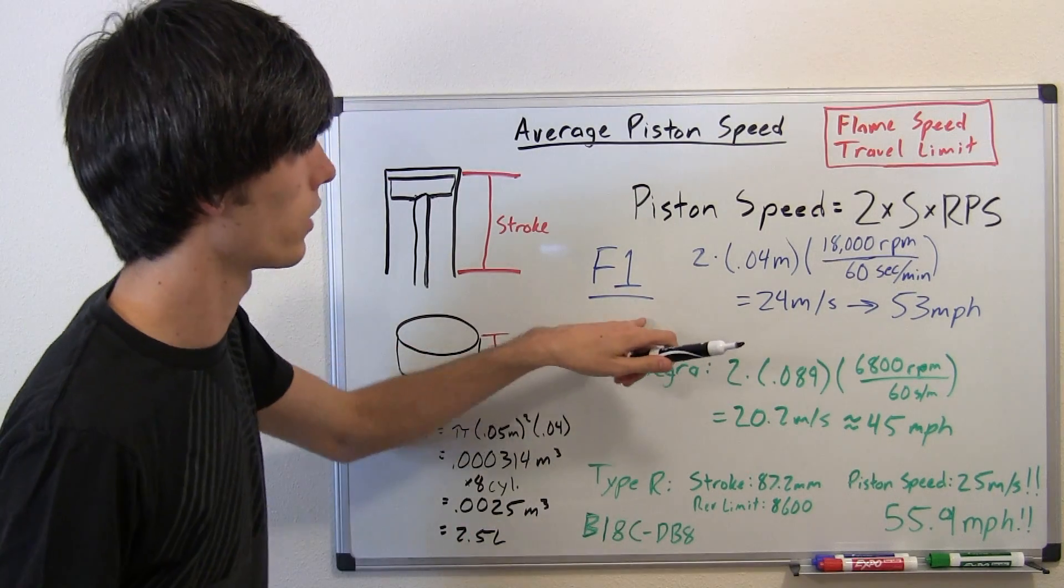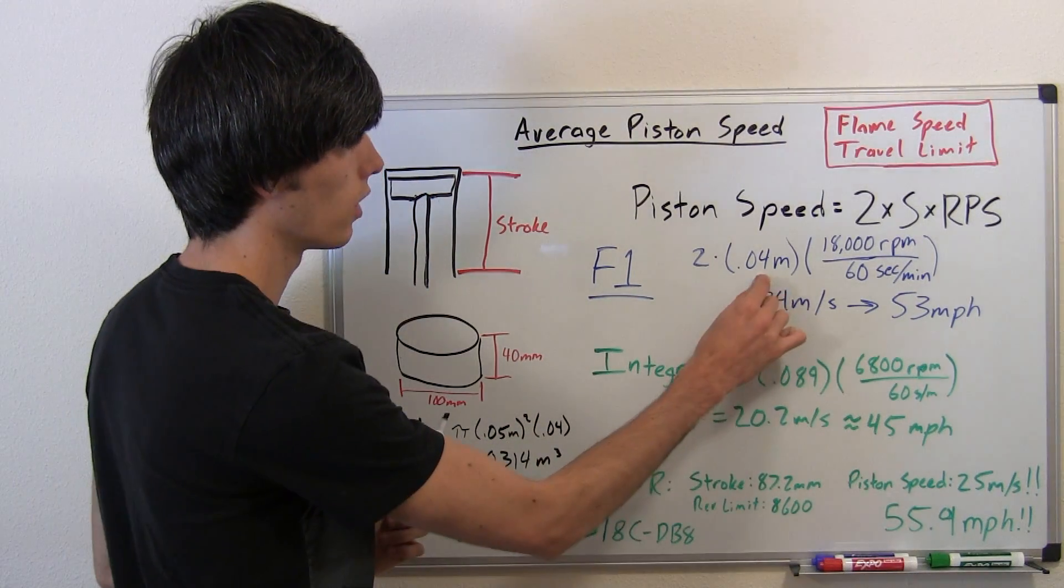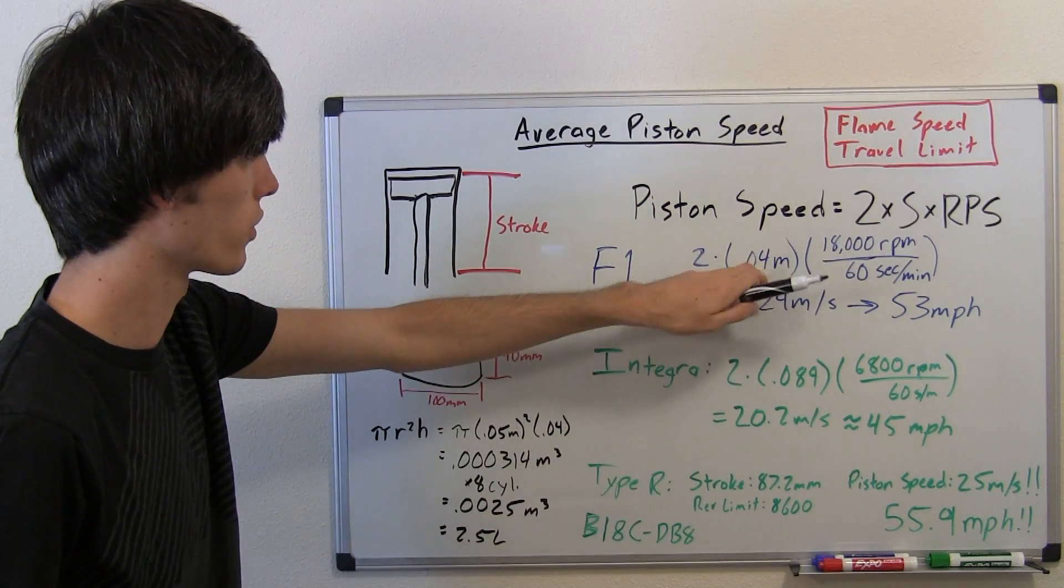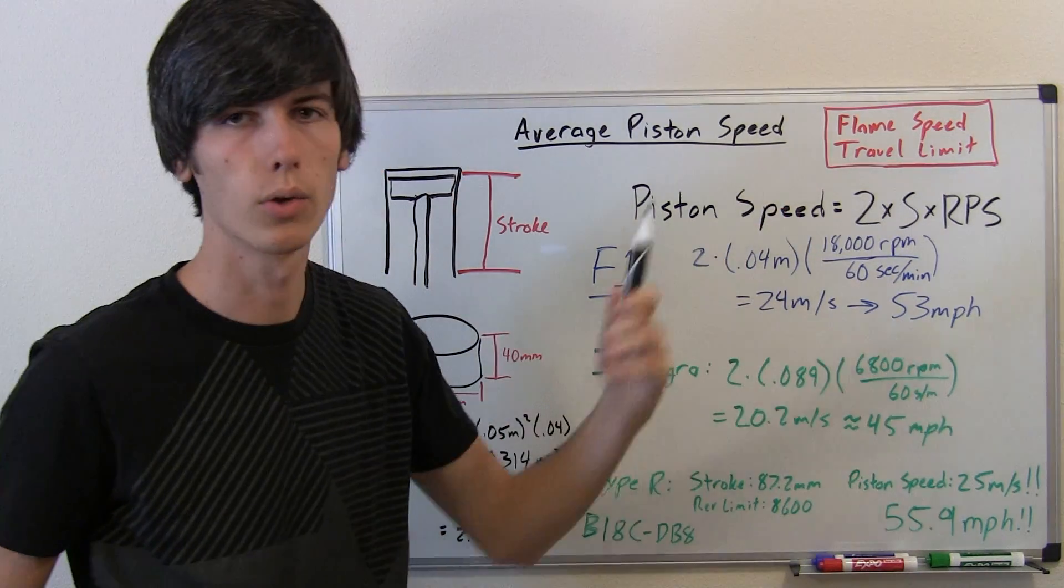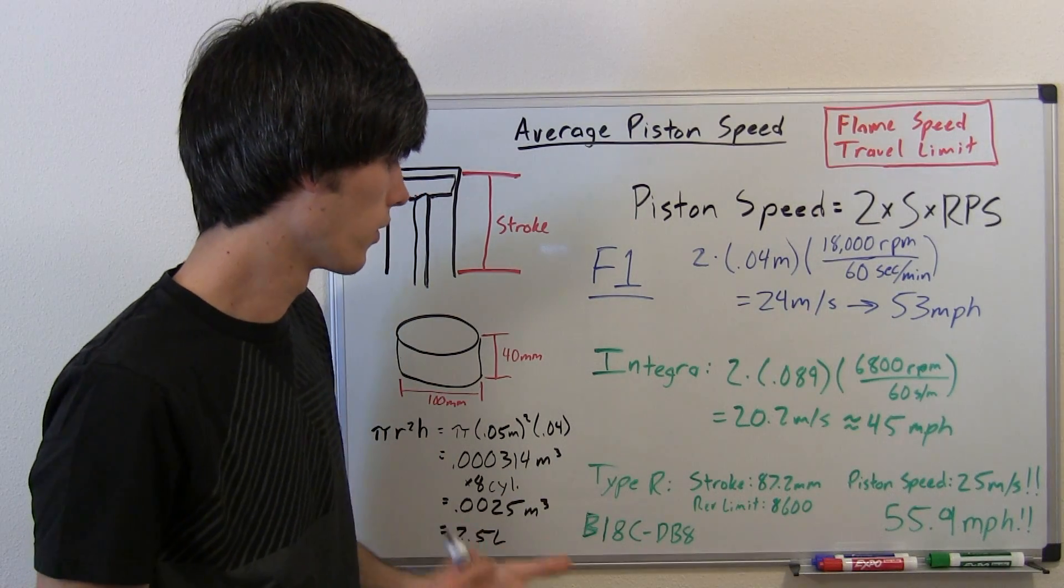What Formula One wanted to do was have higher revolutions per minute. And in order to do that, they had to lower their stroke. So, by lowering the stroke, you can lower your piston speed, get it to a reasonable speed, and then you can have higher RPMs.